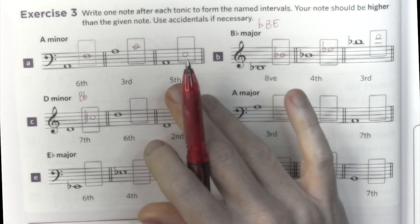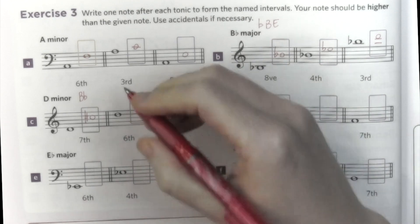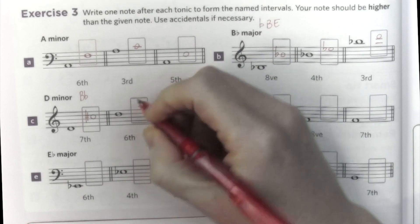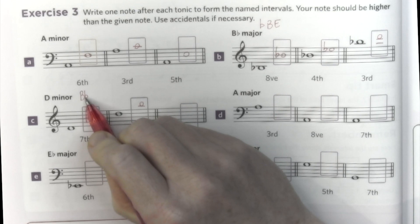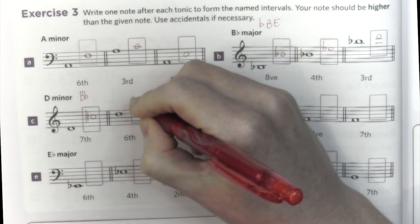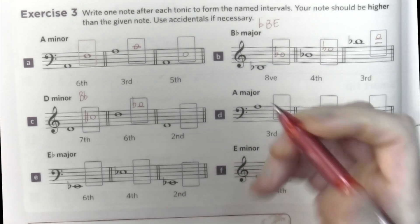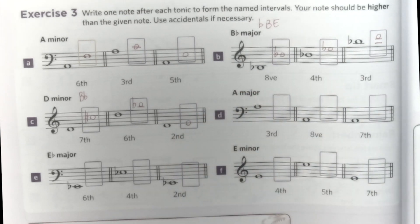Re, Mi, Fa, Sol, La, Si. We have a B to write and this B, as we said, is flat. A second from Re is just Mi — no flats, no sharps. Done.